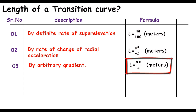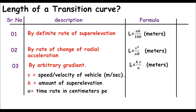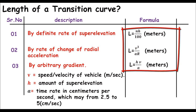Method number three is based on arbitrary gradient. For this approach we use the formula: L = h × v / a. This gives us the length of the transition curve in meters, where v is the speed or velocity of the vehicle in meters per second, h is the amount of super elevation, and a is the time rate in centimeters per second, which may range from 2.5 to 5 centimeters per second.